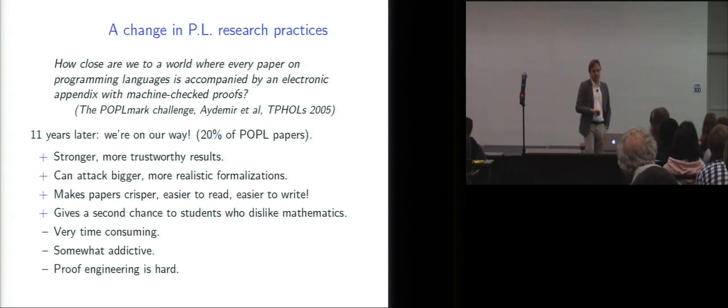So that was the opening statement of the POPLmark challenge about 11 years ago. How close are we to a world where every paper on programming languages is accompanied by an electronic appendix with machine-checked proofs? And, well, even 11 years later, we are on our way. So I estimate about 20% of the POPL papers come with such an electronic appendix. And, well, this has some obvious benefits that we already mentioned. We get stronger, more trustworthy results, and we can attack bigger, more realistic formalizations without compromising on mathematical quality, which is good.